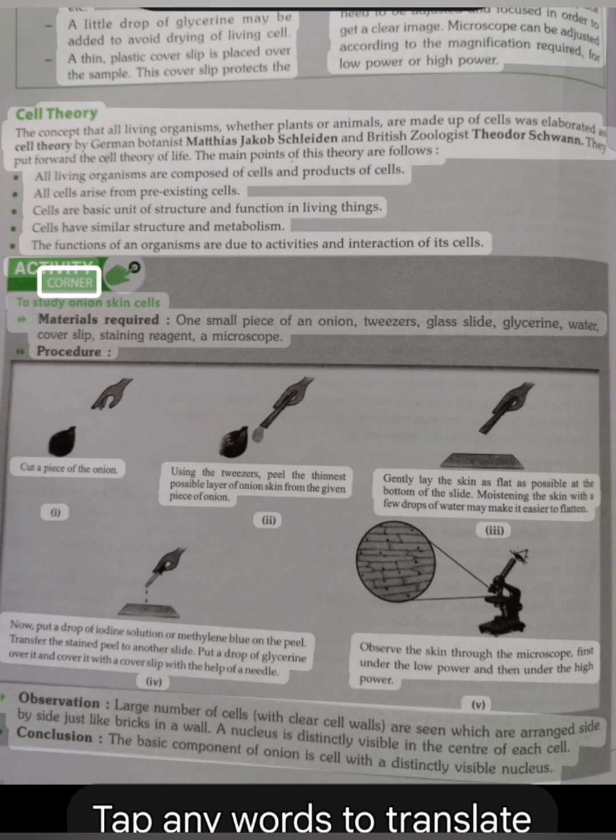Activity Corner: To study onion skin cells. Materials required: One small piece of an onion, tweezers, glass slide, glycerin, water, cover slip, staining reagent, a microscope.